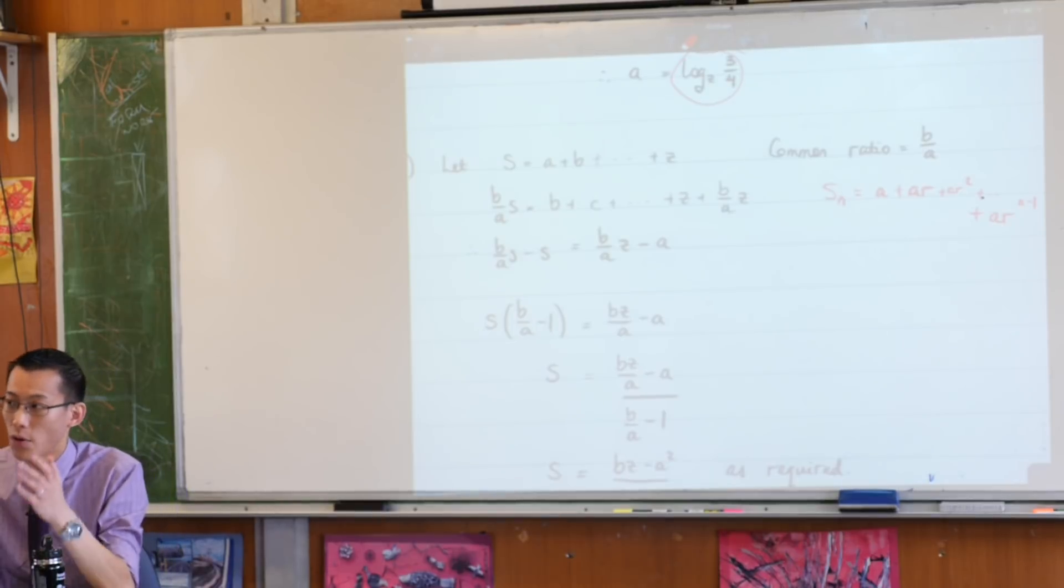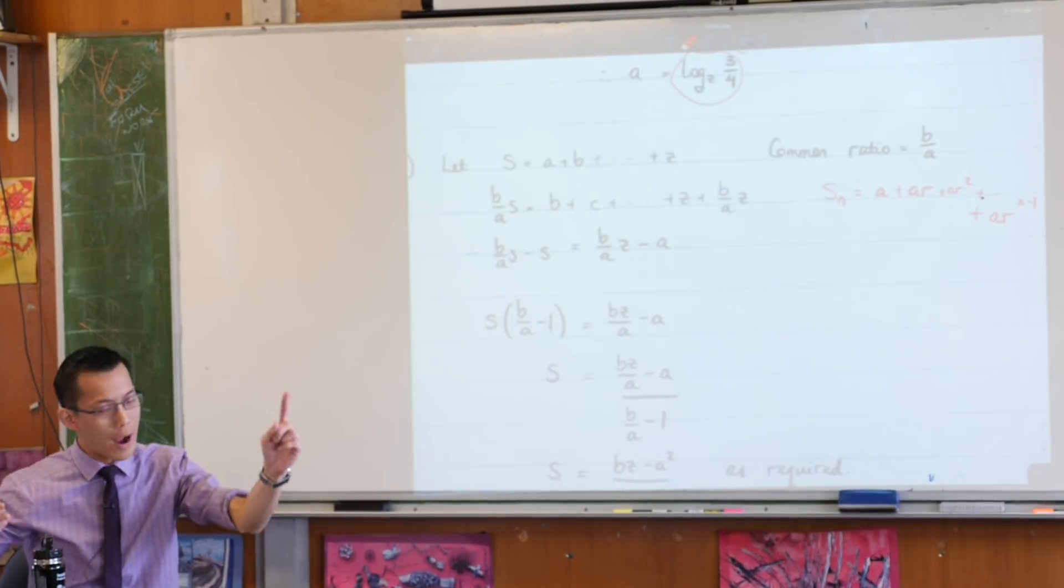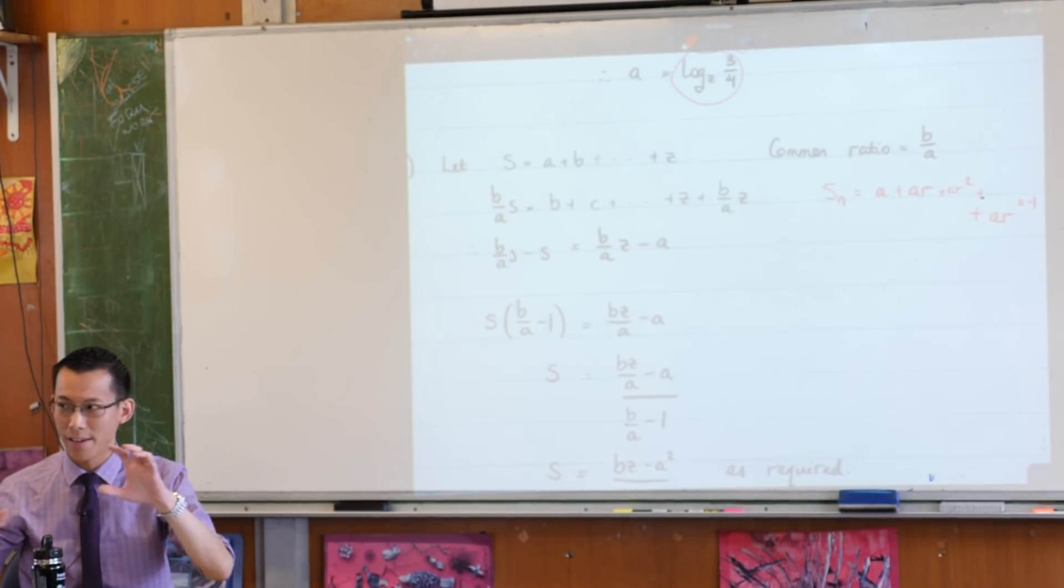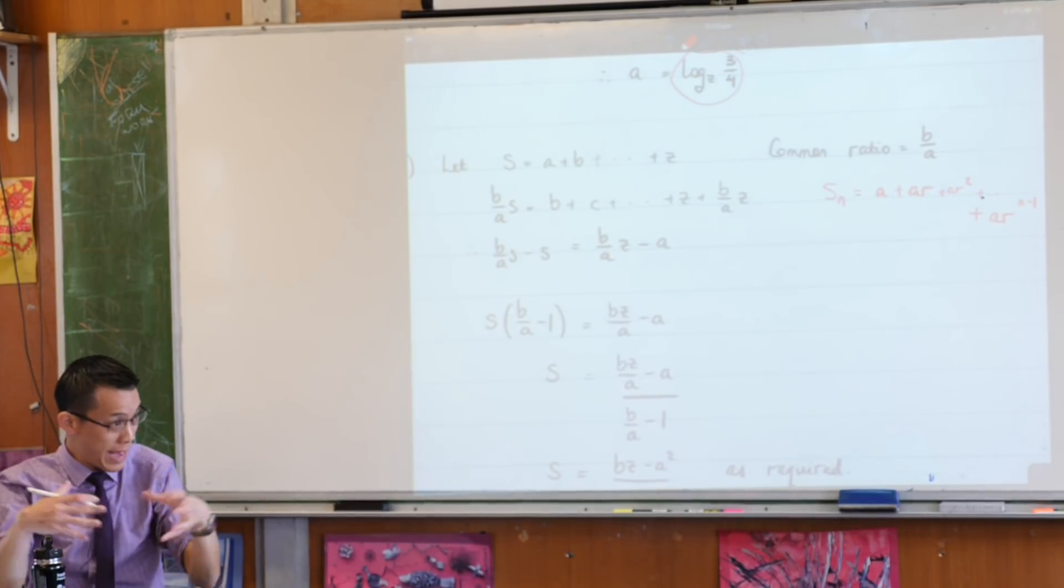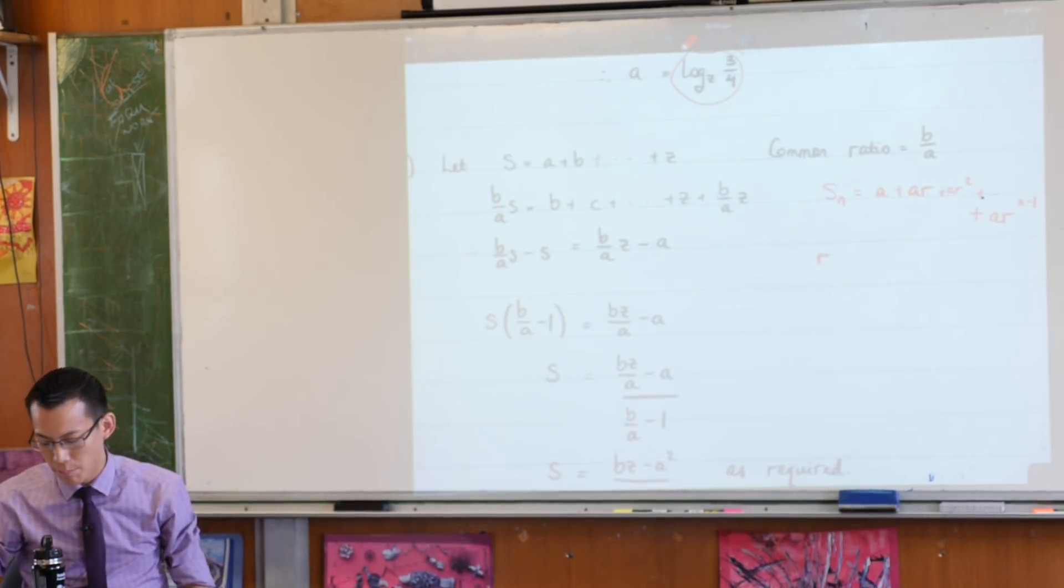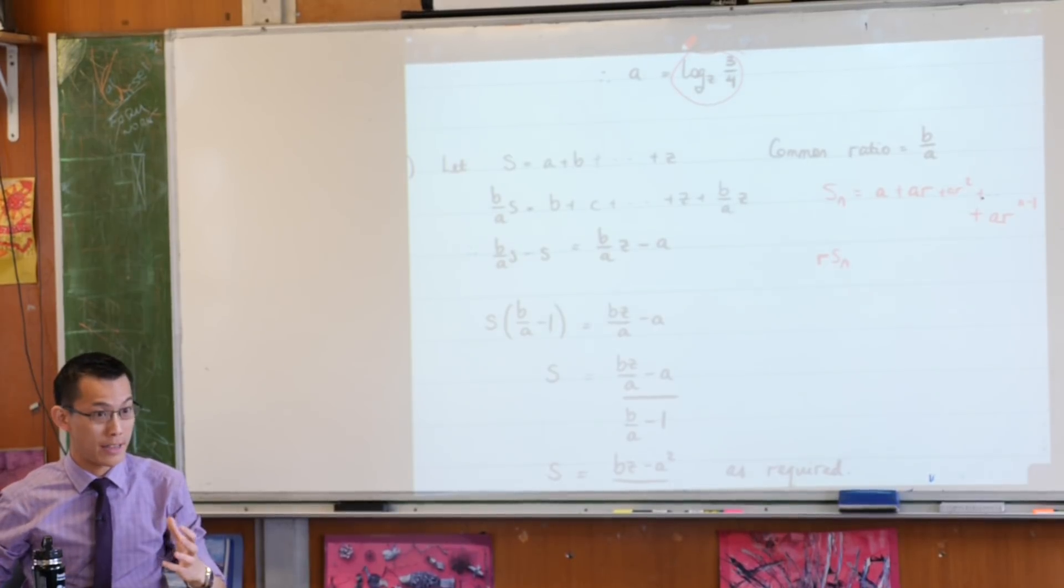Now this, hopefully when you see it in this form, it sort of triggers for you, oh, I remember now, the way that we sort of collapse this indeterminate number of terms into something manageable, was we multiplied by that common ratio. Do you remember that? Does it ring a bell?